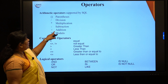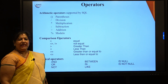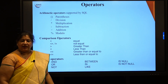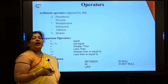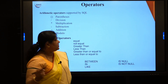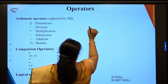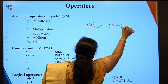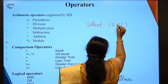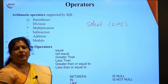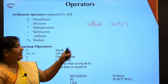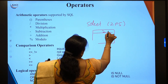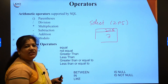We have arithmetic operators supported by MySQL: addition, subtraction, multiplication, division, and modulo. These can be part of your column data or used with general data. For example, if I simply say SELECT 2 + 5, the output returned will be a table where 2+5 and 7 is displayed.